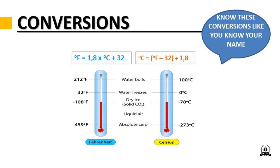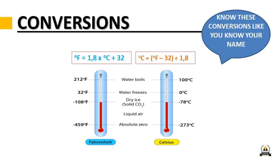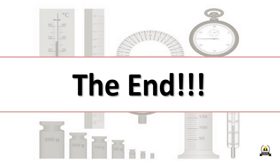For temperature conversions, the units are Fahrenheit and degrees Celsius. To convert Celsius to Fahrenheit, use the formula: (1.8 × °C) + 32. To convert Fahrenheit to Celsius, use: (°F − 32) ÷ 1.8. You're essentially rearranging the same formula by changing the subject. This is the foundational knowledge you need when it comes to measurement.